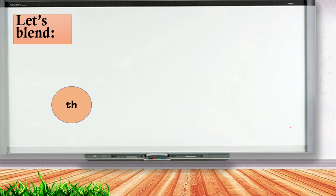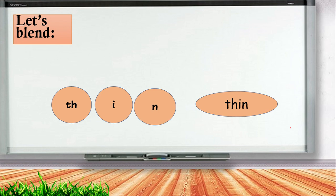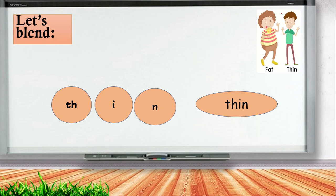Now let's blend these sounds. Th-e-n — can you read the word? Thin. Very good. What does 'thin' mean? Look at this picture — look at this boy. This boy is thin, but this boy is fat. So here we have 'thin'.